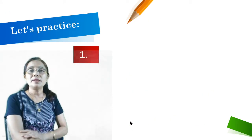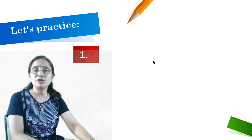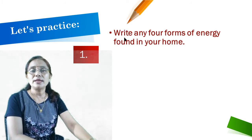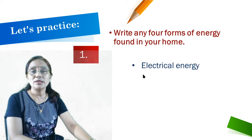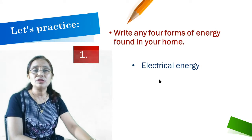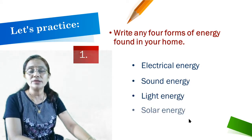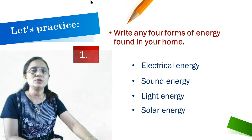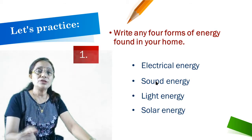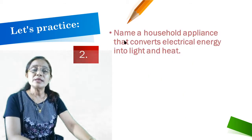Now we will complete the worksheet. First question: write any four forms of energy found in your home. The answers are: electrical energy, sound energy, light energy, and solar energy. You can use your own examples.